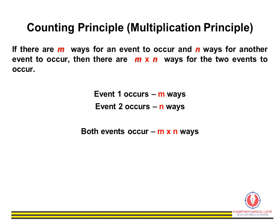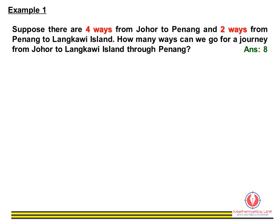If event one can occur in m ways and event two can occur in n ways, this means both events can occur in m times n ways.